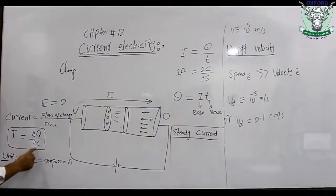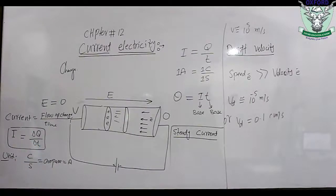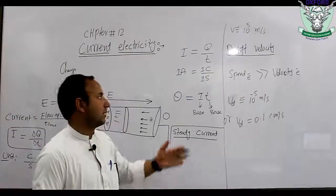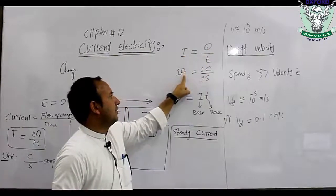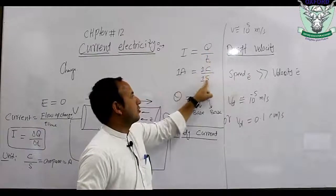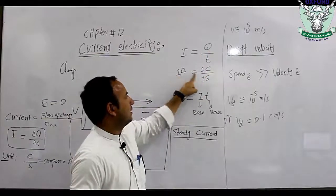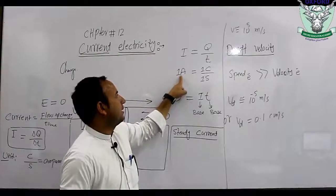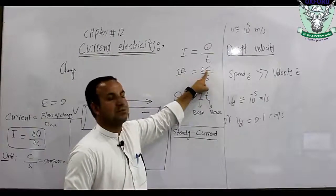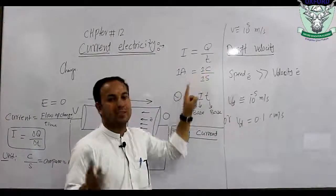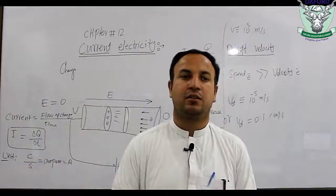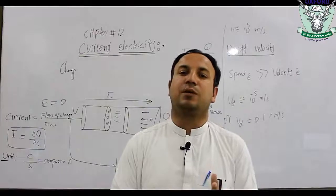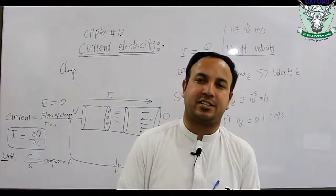The unit of charge is the coulomb and the unit of time is the second, so coulomb per second equals ampere. One ampere is the amount of current when one coulomb of charge passes through any cross-sectional area in one second. Smaller units include milliampere and microampere.